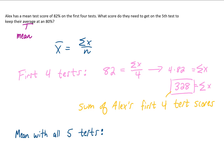To find that mean, we would add up Alex's 5 test scores. We know the first 4 test scores add up to 328, and we don't know Alex's 5th test score just yet, so we're going to call that x.